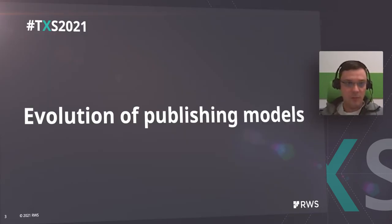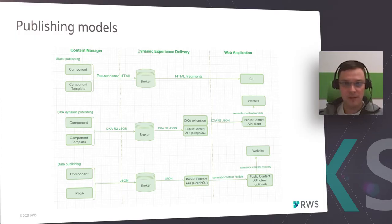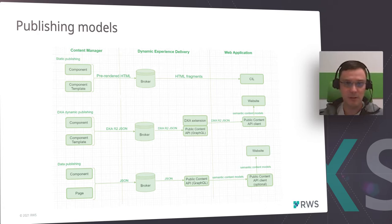Let's talk about evolution of publishing models in Tridion Sites. At the top of the diagram is static publishing — it's not completely gone but not something you will see very often. Rendering, or in other words generation of website content view, is happening on Content Manager using templating, and we are publishing pre-rendered HTML fragments to the broker database. These fragments can then be requested from the web application using a serial call.